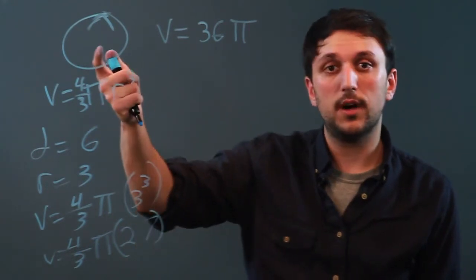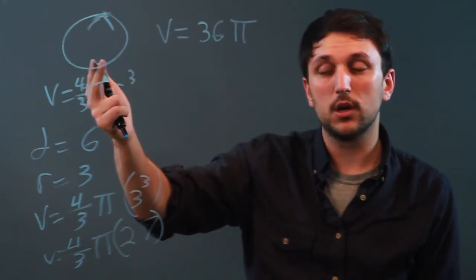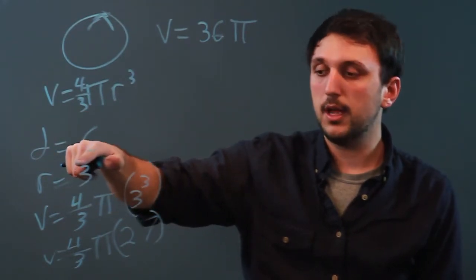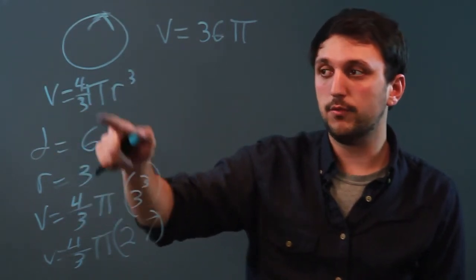So that's how you solve the volume of a sphere using the diameter. You have to get down to the radius by cutting it in half and then doing the equation for the volume.